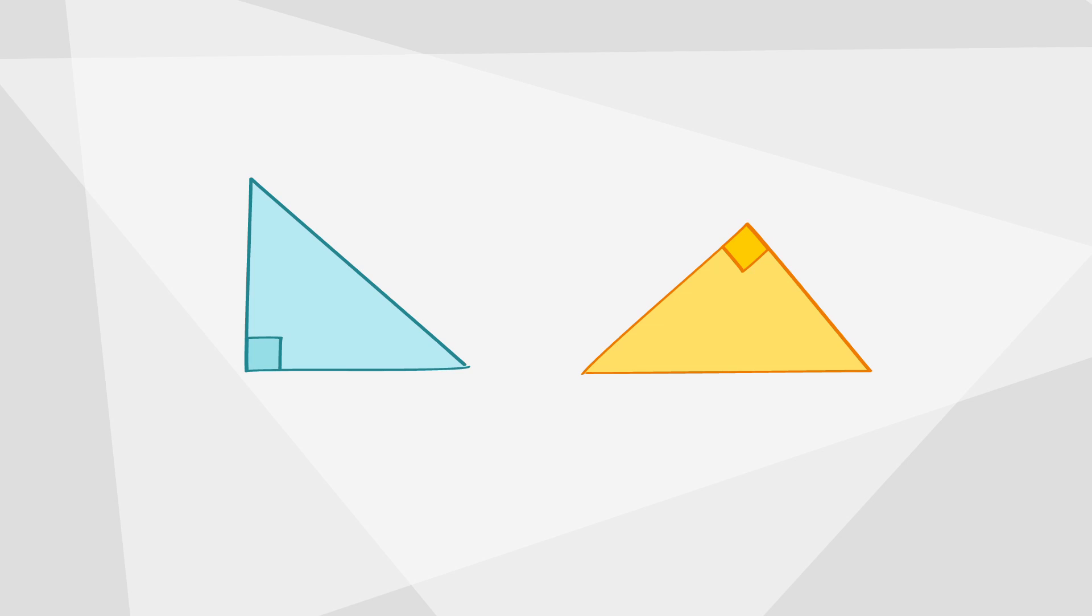Finally we have a theorem that only works for right triangles. It's called, drumroll please, hypotenuse leg. If the hypotenuse and leg of one right triangle are congruent to the corresponding parts of another right triangle then the right triangles are congruent.